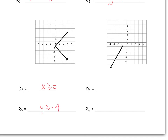And the last example. For the domain, we're talking about the X values — this is a point, and all X values from negative 1 going to negative infinity will have values, but there won't be any values to the right. So X is less than or equal to negative 1. It so happens that Y has the exact same range — the largest Y value is negative 1, and all possible Y values underneath exist, so Y is less than or equal to negative 1.